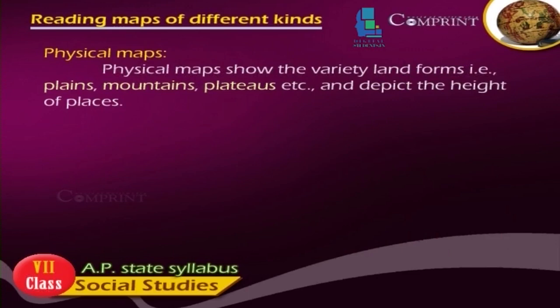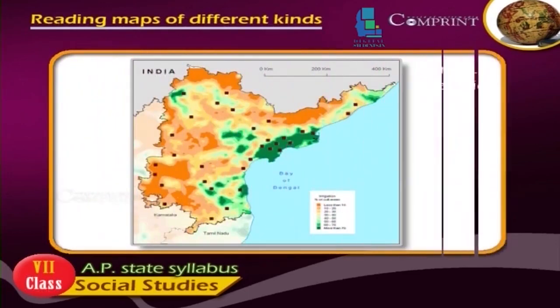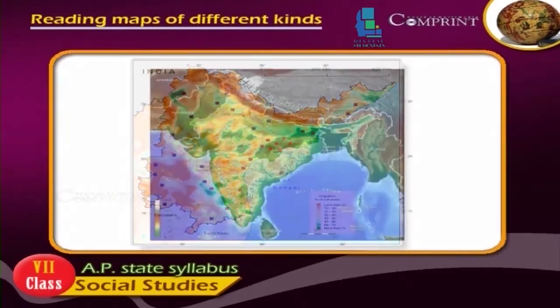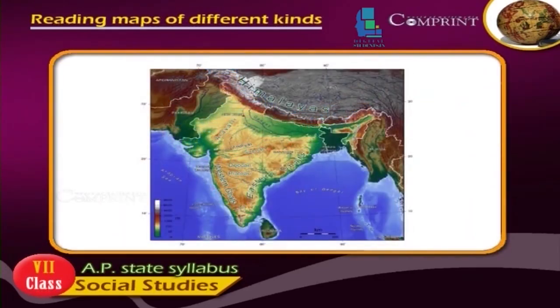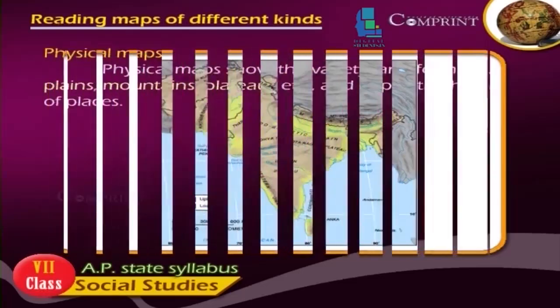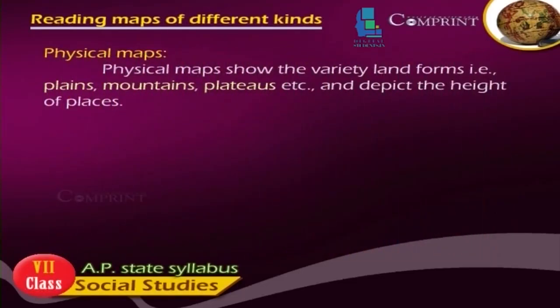Physical maps show the variety of landforms, i.e. plains, mountains, plateaus, etc., and depict the height of places.